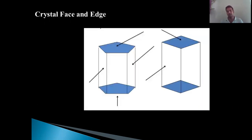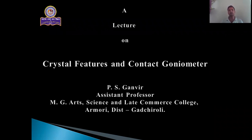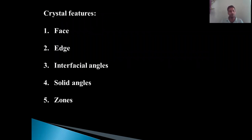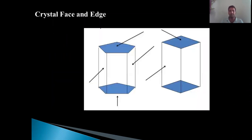Let us revise today's lecture. We studied about crystal features and the contact goniometer, covering crystal face, edge, interfacial angles, solid angles, and zones. A crystal face is a planar feature which bounds the crystal, and every point on the face lies in a single plane. A crystal can have a maximum of 48 faces and a minimum of two faces depending on the symmetry. An edge is formed when two faces intersect — it is the line indicating the intersection of two adjacent faces.